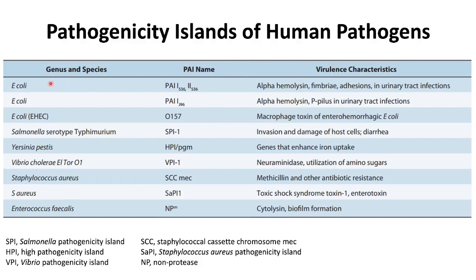E. coli has a pathogenicity island named 536, with virulence traits collectively transferred including alpha-hemolysin, fimbriae, and adhesins in urinary tract infections. Similarly, another set of pathogenicity islands called PAI-I-196 has traits like alpha-hemolysin and P-pilus, and is also responsible for urinary tract infections.